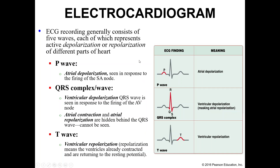EKG recordings typically have five waves to talk about, and we combine three of those into one. These represent depolarizations and repolarizations of the heart. Depolarization means we are opening sodium channels, going from resting membrane potential and shooting up. Repolarization involves potassium and calcium channels, and we are moving back down towards resting membrane potential.